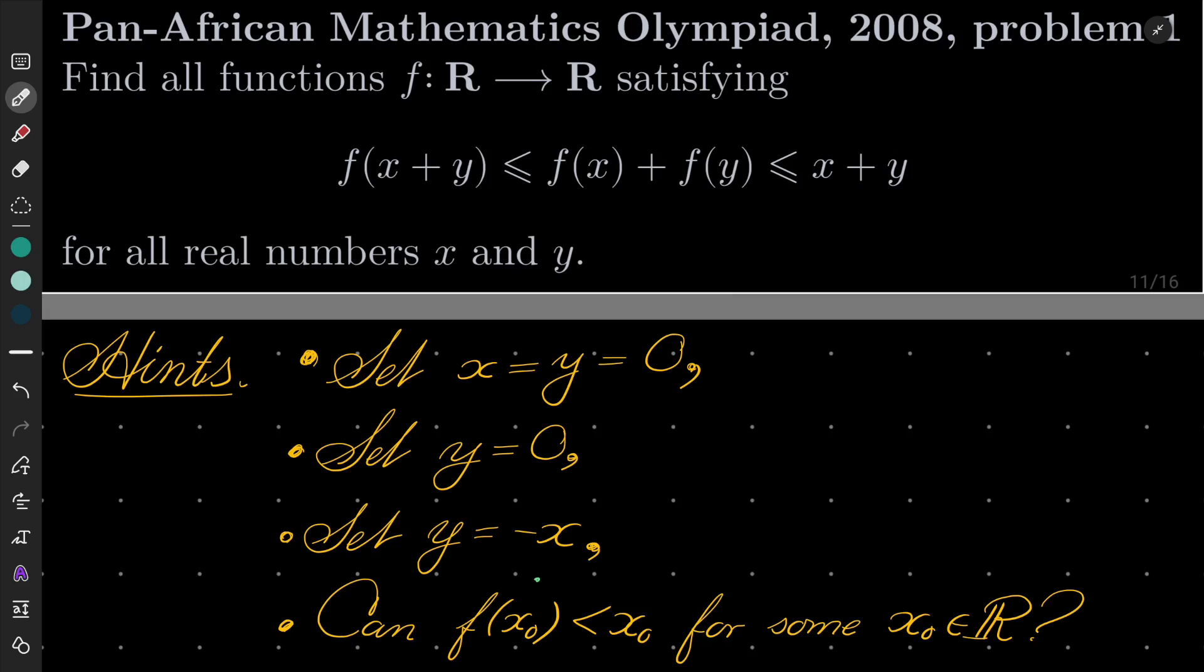Find all functions f from the field of real numbers into itself, satisfying the double inequality, namely f(x+y) ≤ f(x) + f(y) ≤ x+y for all real numbers x and y.